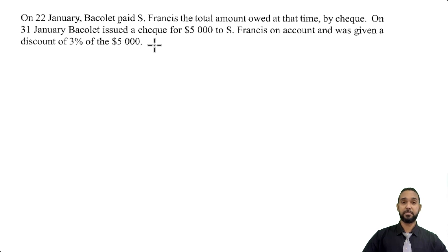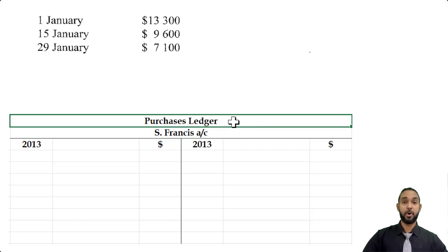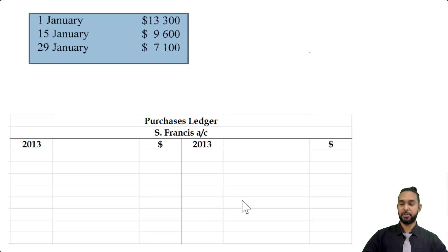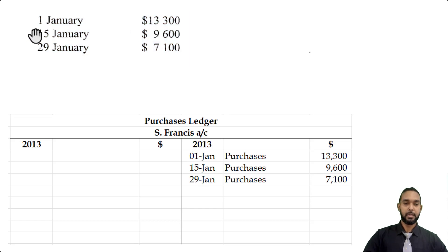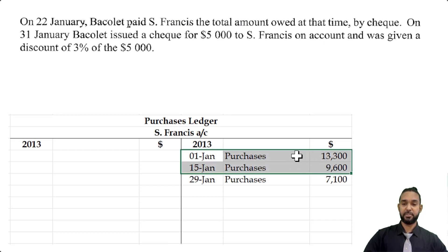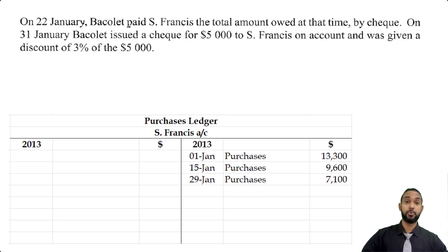They want us to open S. Francis's account and populate it with the information and balance it off. S. Francis is a trade creditor — we're making credit purchases from S. Francis, so S. Francis's account will belong in the purchases ledger. There are no opening balances, so we go straight to the three credit purchase amounts: $13,003 on the 1st of January, $9,006 on the 15th, and $7,100 on the 29th. On the 22nd of January, Barclay paid the total owed at that time by check — only the first two purchases apply, giving us $22,900 on the debit side.